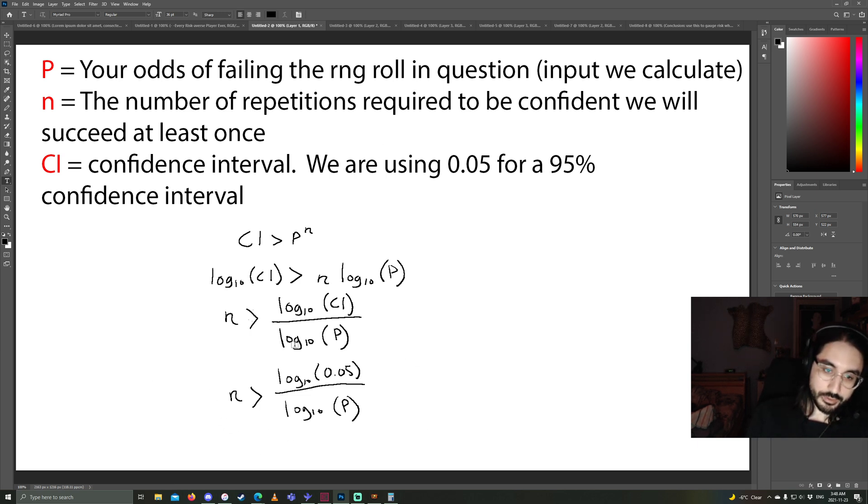If you can solve these problems, it will help you conceptualize the game in a new way. Okay, so we're going to be going over the math behind this equation that basically works for literally everything that Path of Exile will throw at us. And it's right here. There's three inputs. There's P. Your P is the odds of failing the RNG roll in question. So it's the odds of getting the bad outcome.